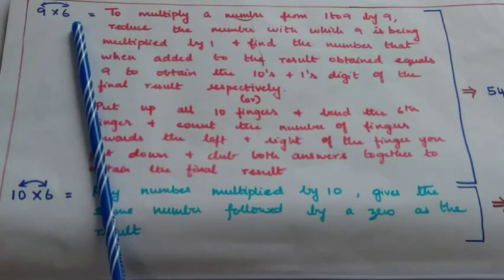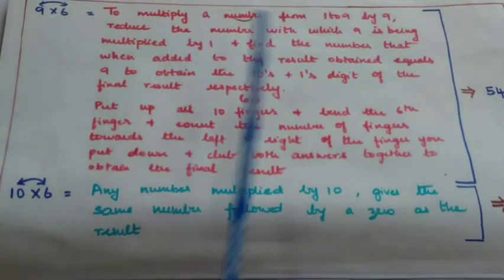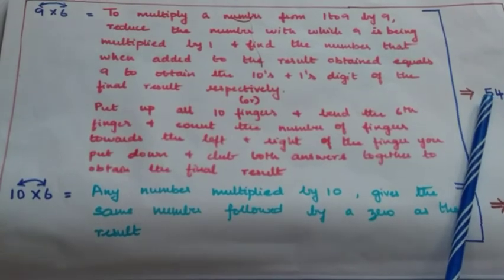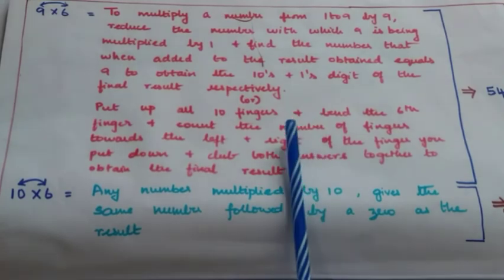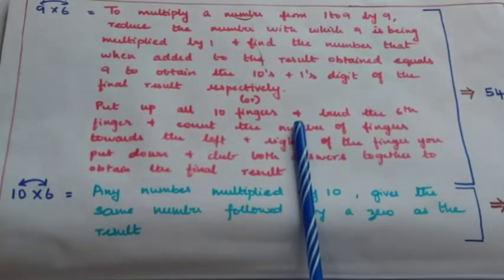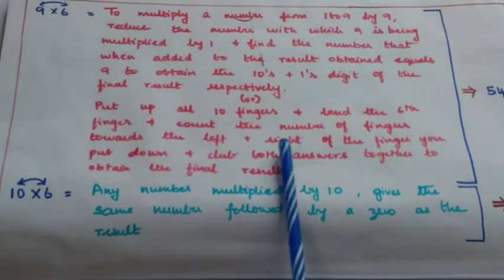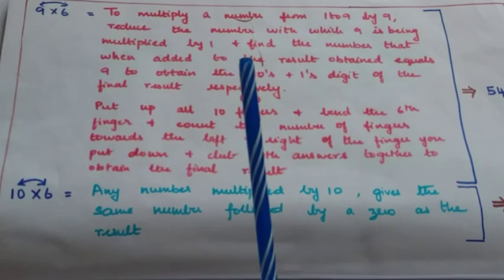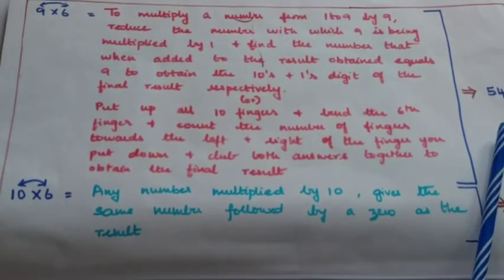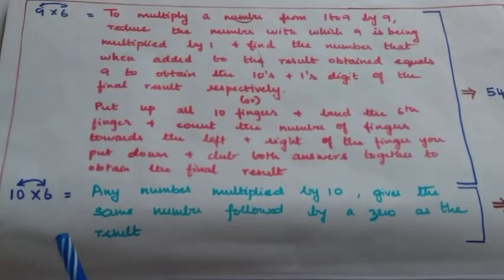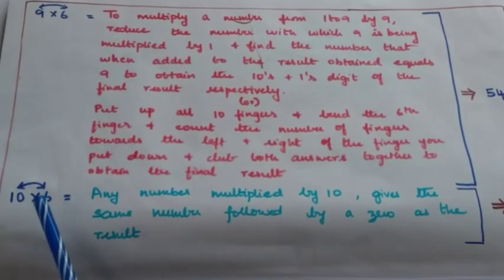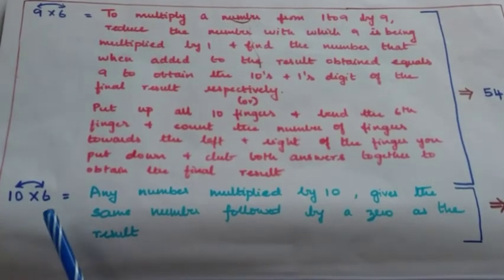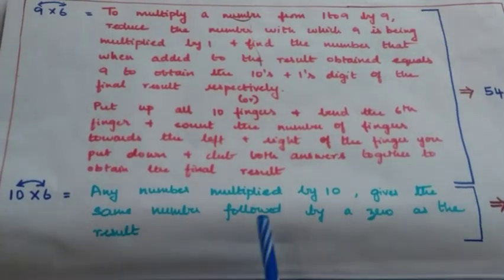Since 9 is multiplied by 6, reduce 6 by 1 to get the tens digit 5, and find the number that when added to 5 equals 9 — which is 4. Or use the finger trick: put up all 10 fingers, bend the 6th finger, and count fingers to the left and right. You get 5 fingers to the left and 4 to the right, giving the result 54. For row 10, since 10 into 6 equals 6 into 10 and any number multiplied by 10 gives that number followed by 0, the result is 60.